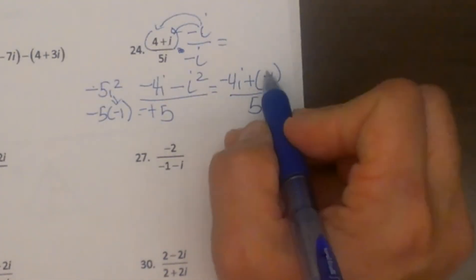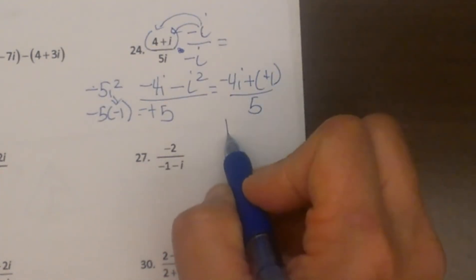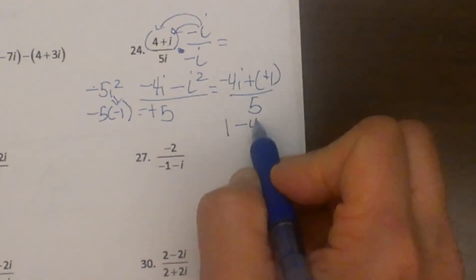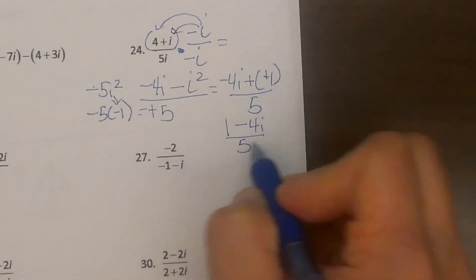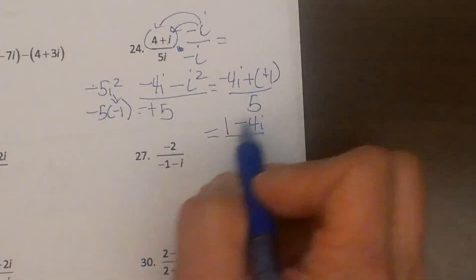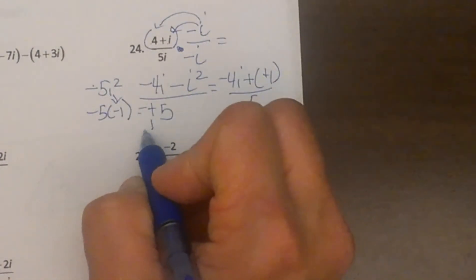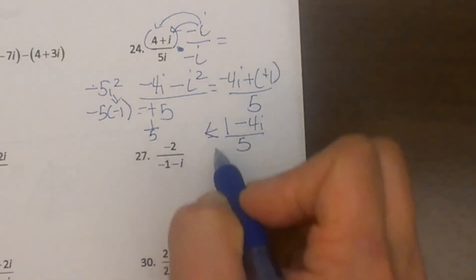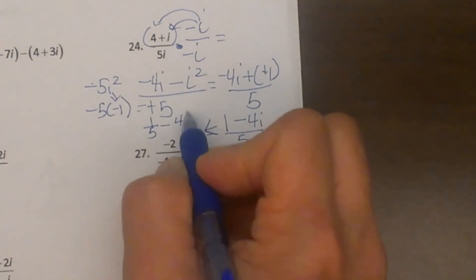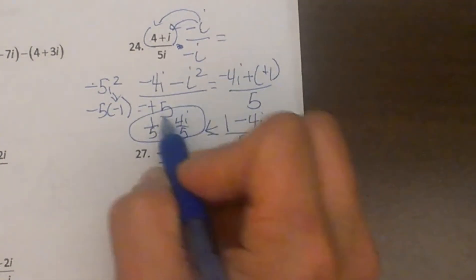This double negative becomes a positive, so I now have a positive 1 minus 4i all over 5. So there is my answer. A lot of teachers want you to split this into two fractions, so you can write it as 1 fifth minus 4i fifths, and there would be your answer.